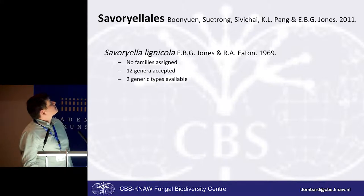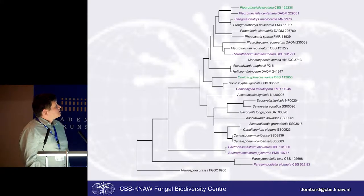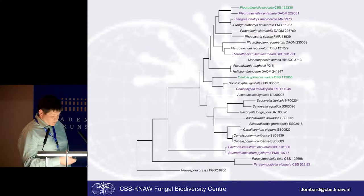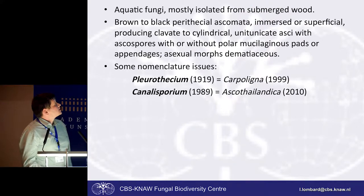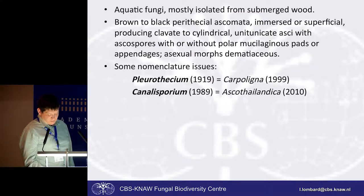Moving to the next order, the Savoreales. In this order, no families have yet been assigned, although it includes 12 genera, with only two generic types available. Looking at the tree, most probably the larger clade will be classified as one family, with the additional two smaller clades as additional families. However, more sampling is probably required for those bottom two clades before we can do that. These are mostly aquatic fungi isolated from submerged wood. They are characterised by brown to black perithecial ascomata. There are a few small nomenclature issues that appear to be quite straightforward.